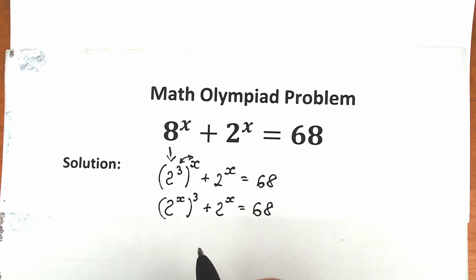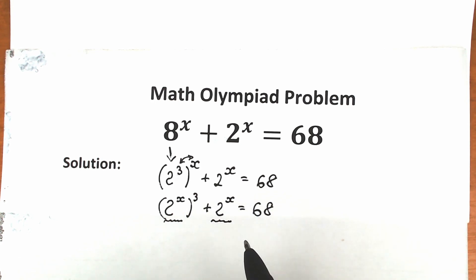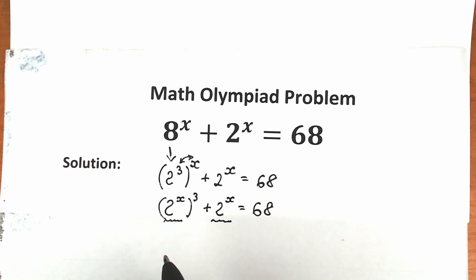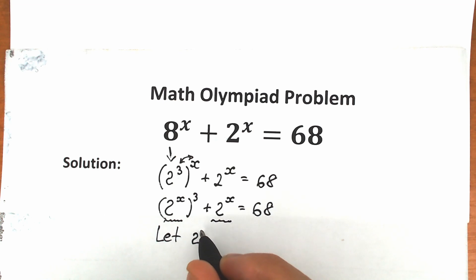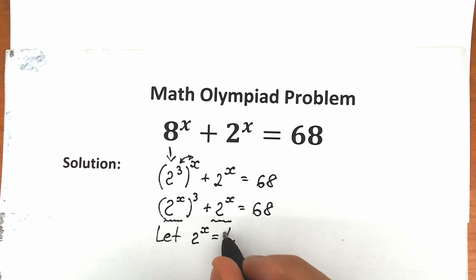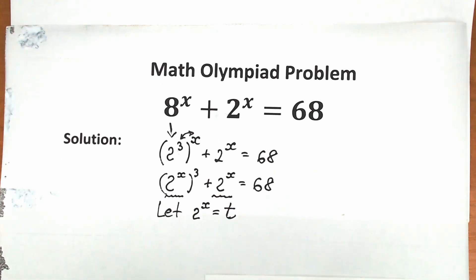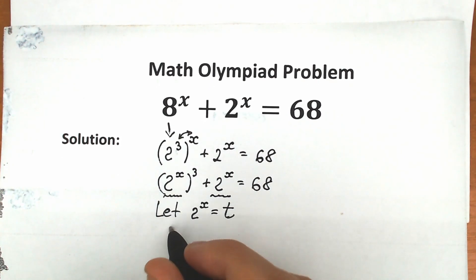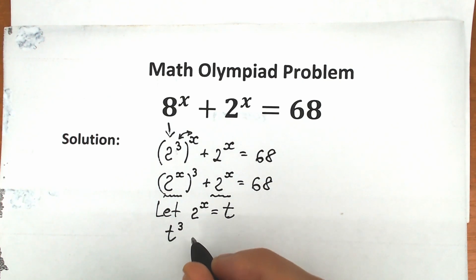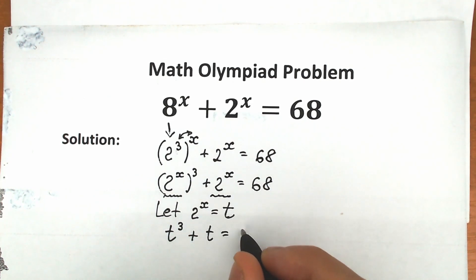Right now, if you look closely, we have completely the same expression — 2 to the x — appearing in both terms. So it's a great moment to make a substitution. Let 2 to the x equal to t. Now let's replace all instances of 2 to the x with t. We have t cubed plus t equal to 68.